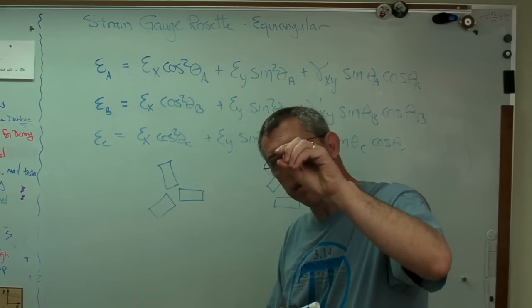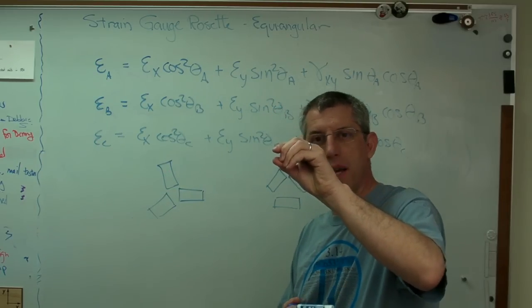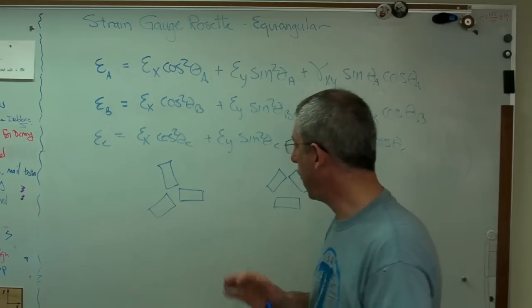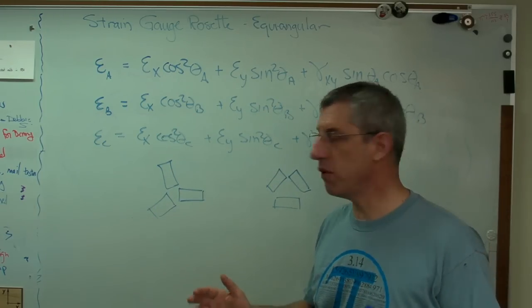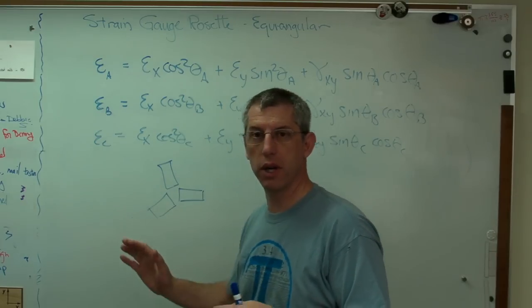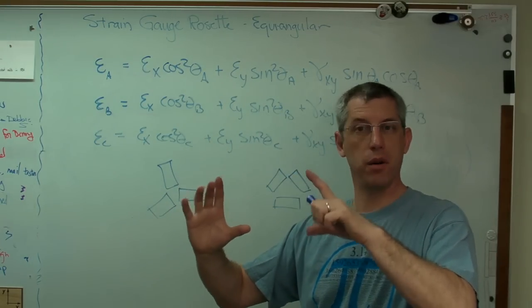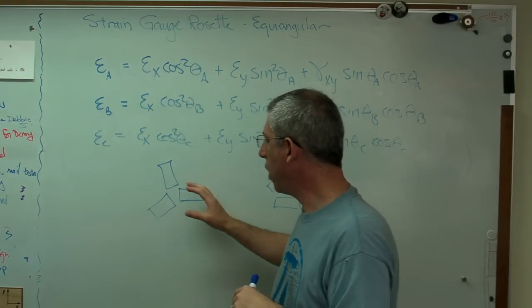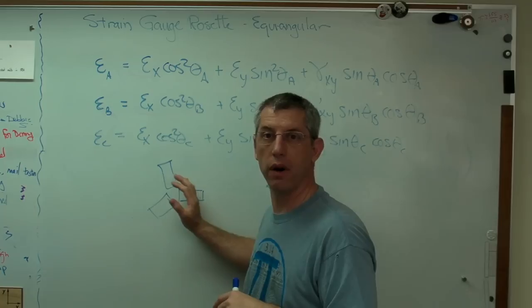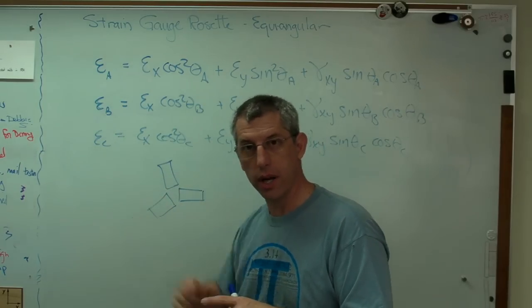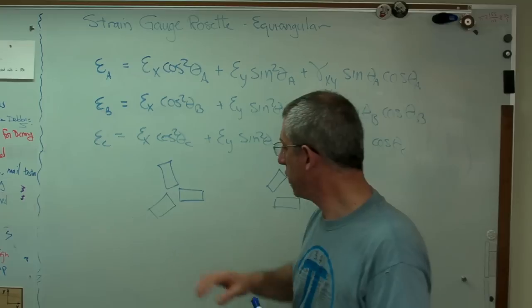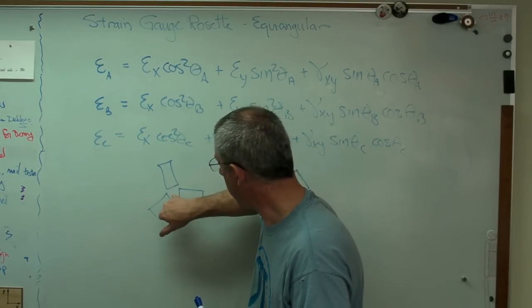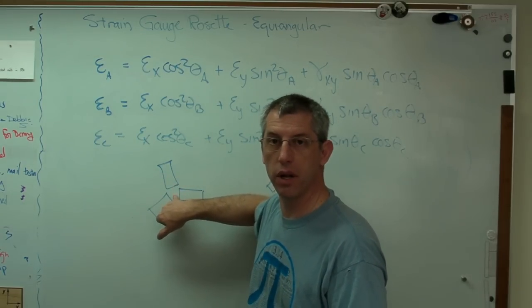Now, rosettes are sometimes that big. They're these little tiny things. They have to be small compared to the change in strain. If you have a very large structure where strains vary slowly across the structure, you could have a rosette that big and it would be okay. But if you have a small part or a part where strains are varying quickly across the part, you need little itty bitty gauges so that you can assume that you're measuring strains at a point. That's one of the underlying assumptions here.